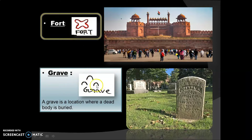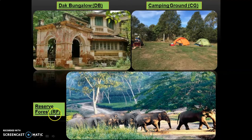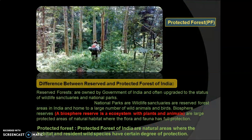The next symbol is grave — drawn in black color, it is little curvy. A grave is a location where a dead body is buried. To find the duck bungalow, look for the symbol 'DB' in capital letters. For camping ground use 'CG', reserve forest 'RF', and protected forest 'PF' — all in capital letters.